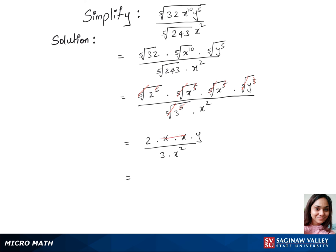The 2x on top and the x square on the bottom gets cancelled. We are now left with 2y over 3. That's our final answer.